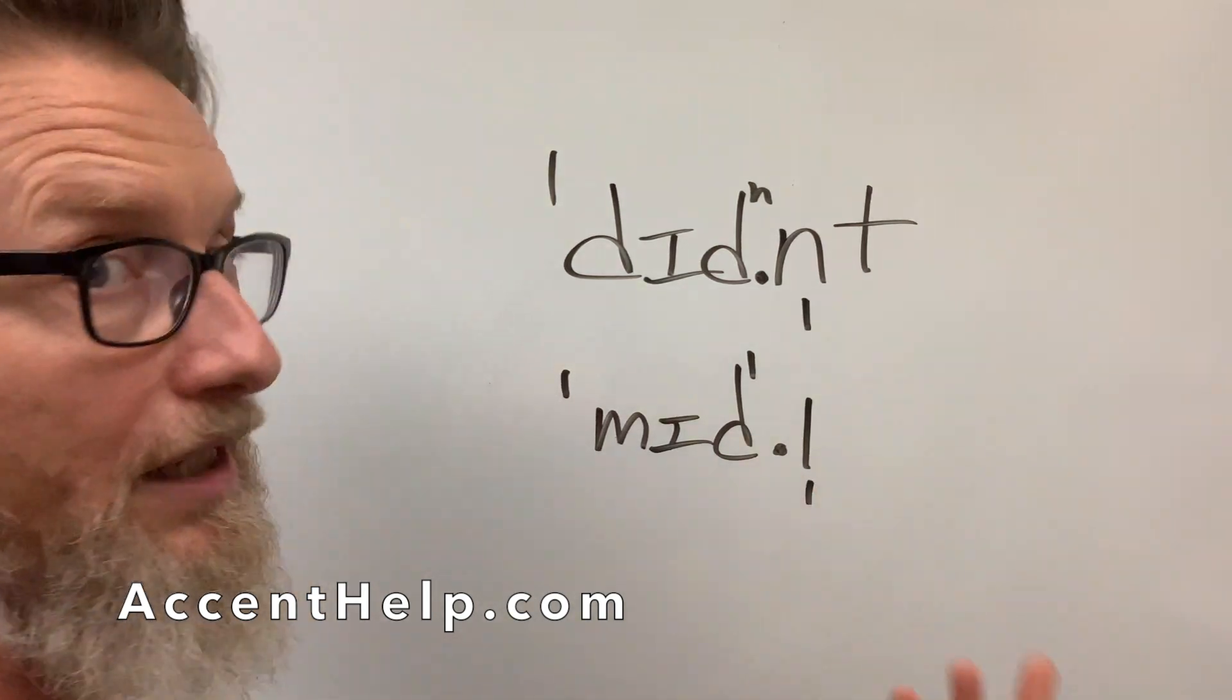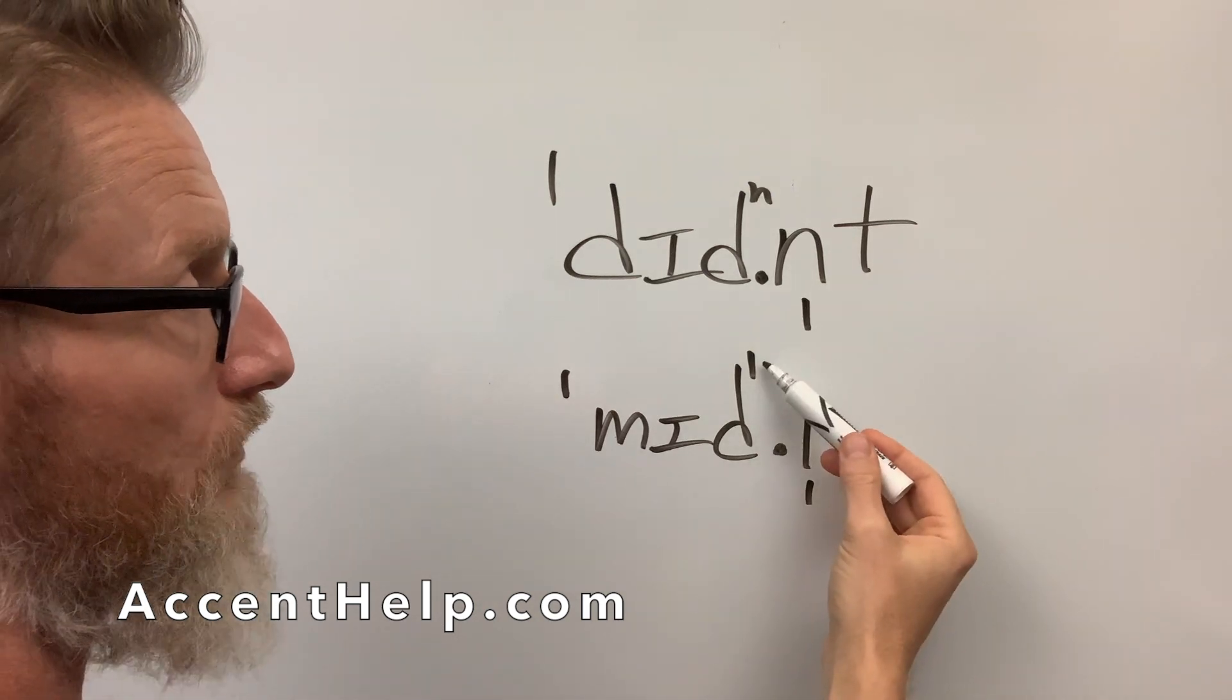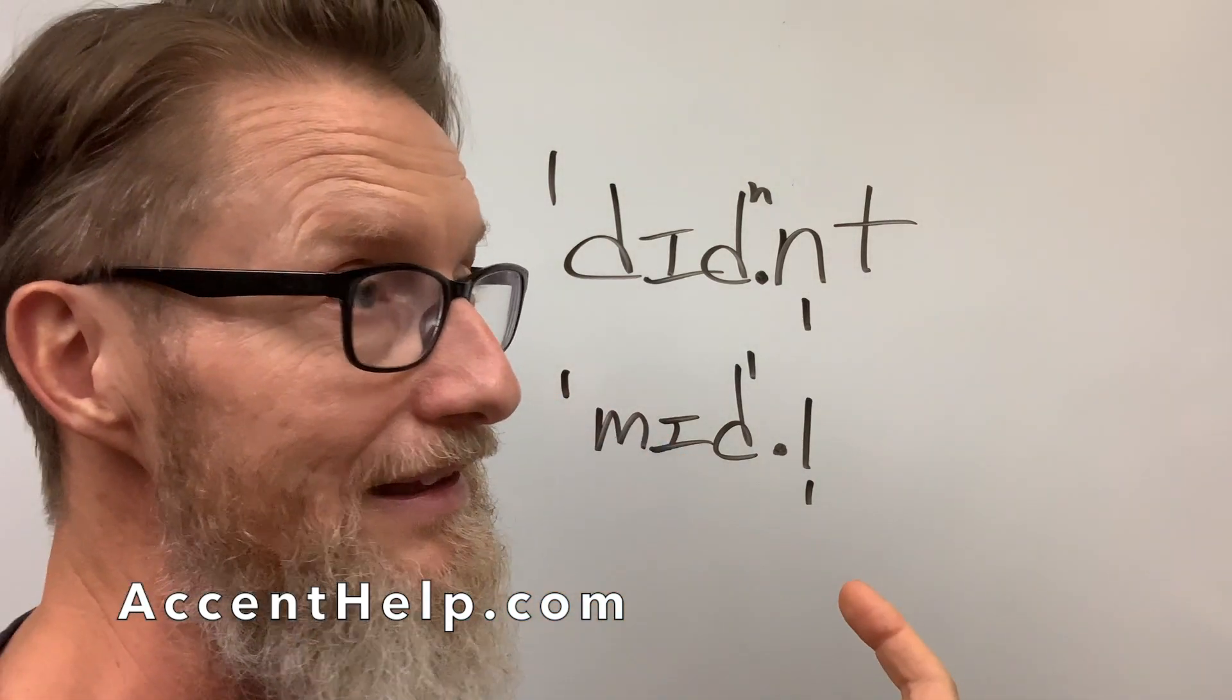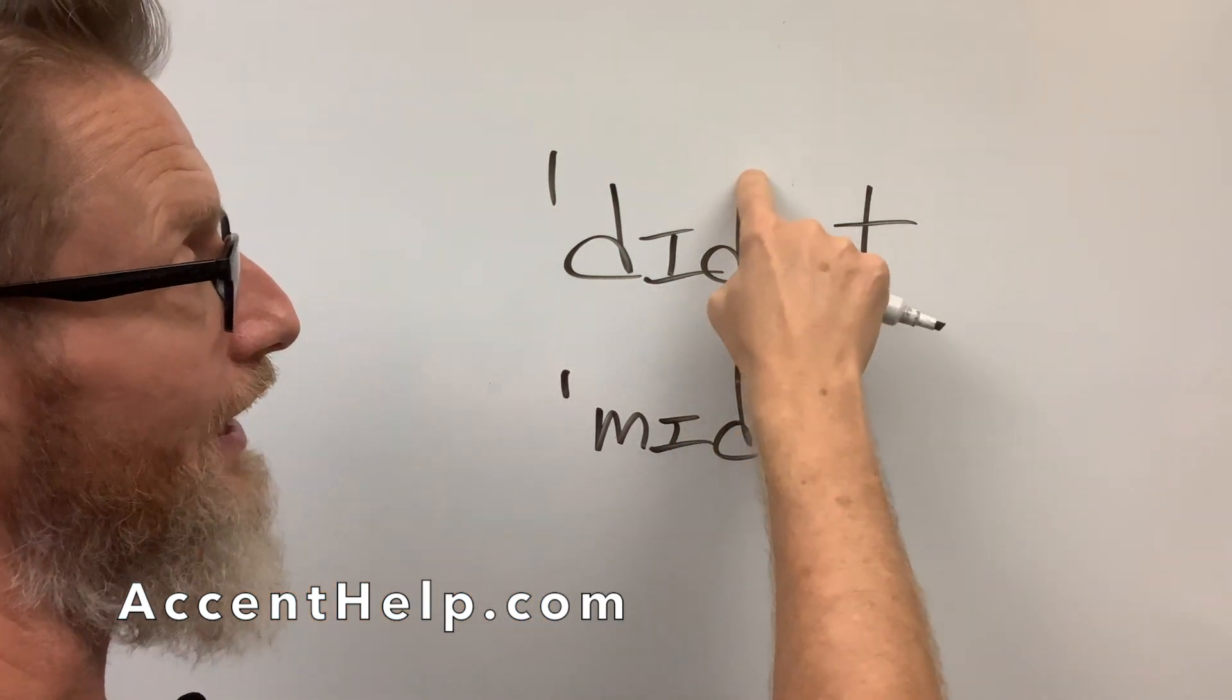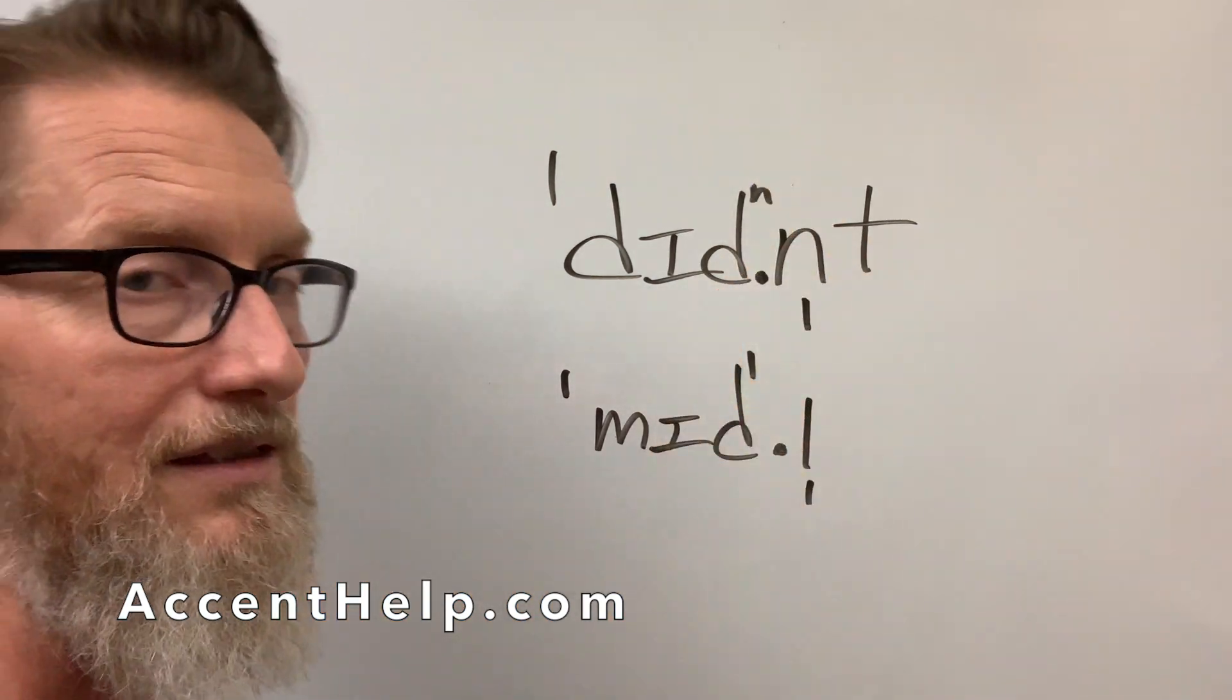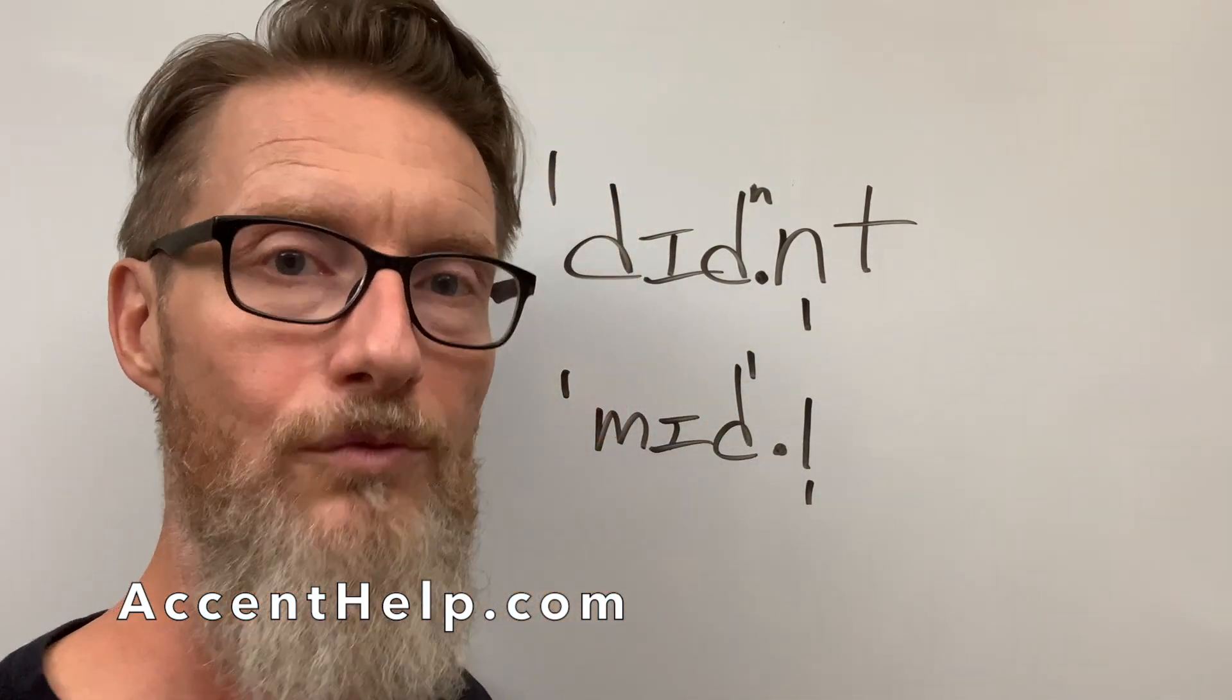I'm also noting a couple of other things in here, a couple of other diacritics, that there's a lateral release, middle, that you're doing the D around the side of the tongue. And I'm also using a little tiny N up here to say that the D is getting released through the nose, didn't.